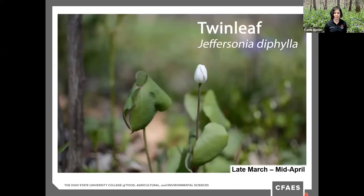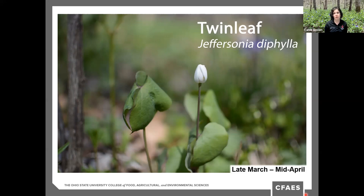Twinleaf is my personal favorite. It's relatively uncommon, so I consider it a real treat to see. It blooms from late March to mid-April and is in the Barberry family. Its scientific name is named after Thomas Jefferson, who grew this plant in his gardens at Monticello. Both leaves and flowers are produced at the same time from a rhizome on long smooth purplish stems, and each leaf has two deeply divided symmetrical lobes — it almost looks like a set of butterfly wings. The flowers are short-lived, typically blooming for only a single day, while the leaves will persist into summertime.